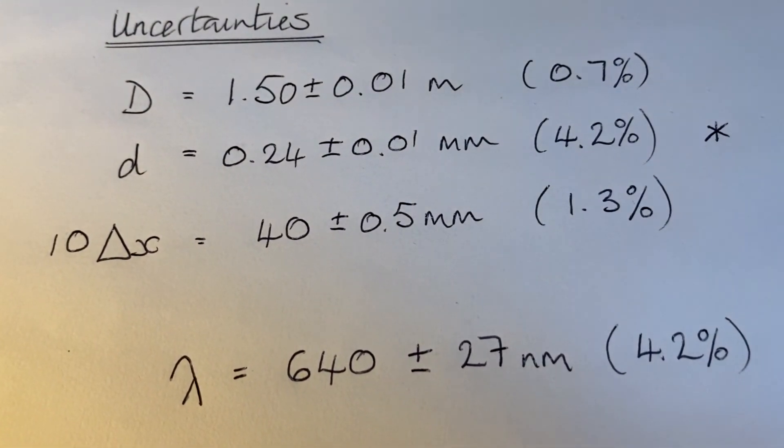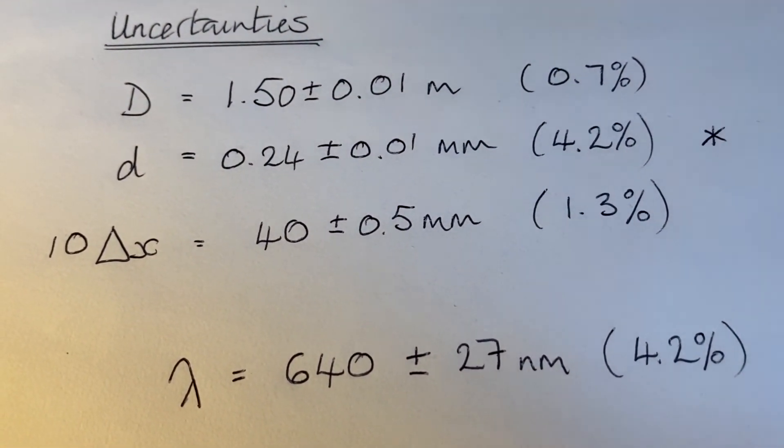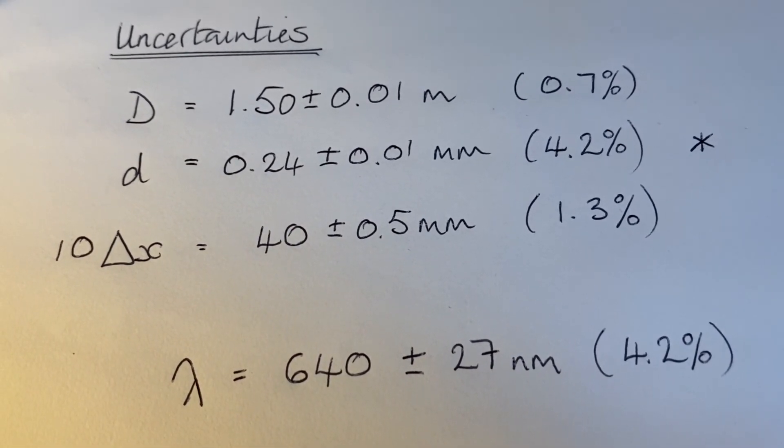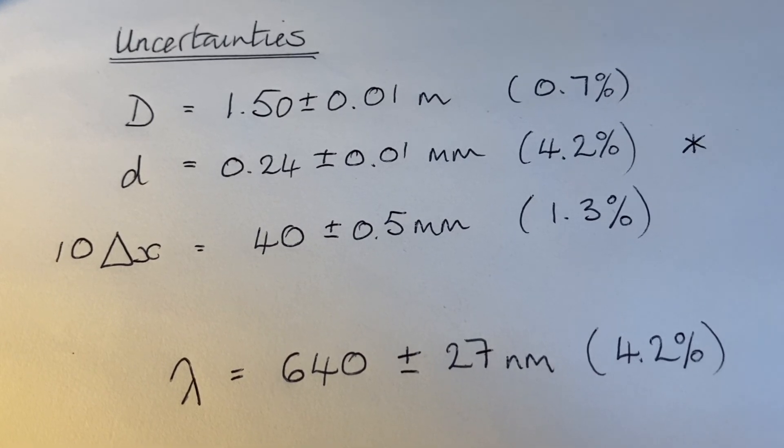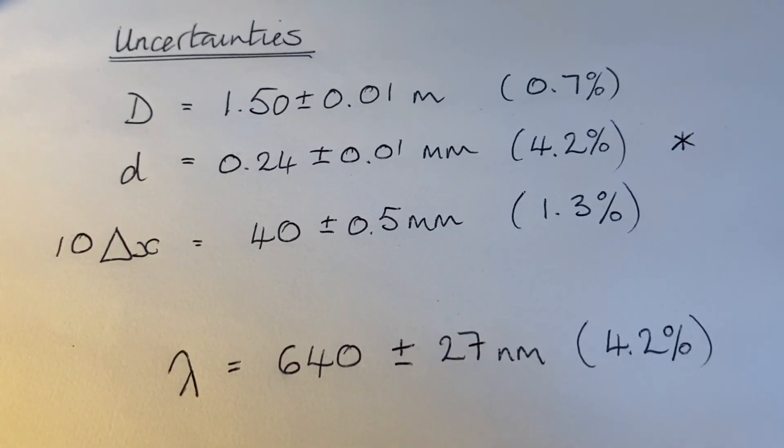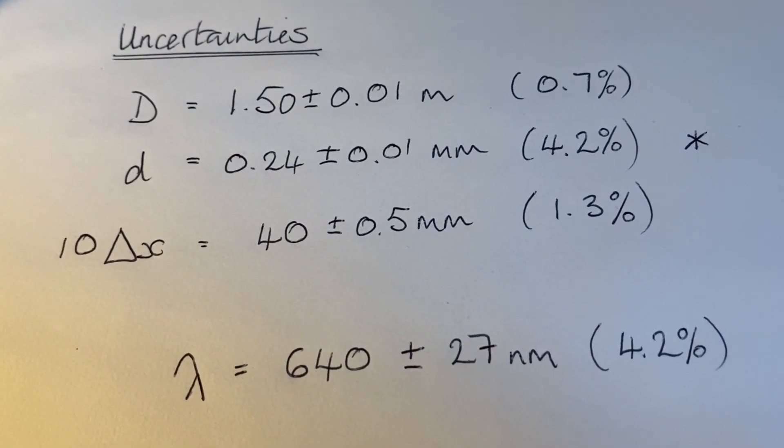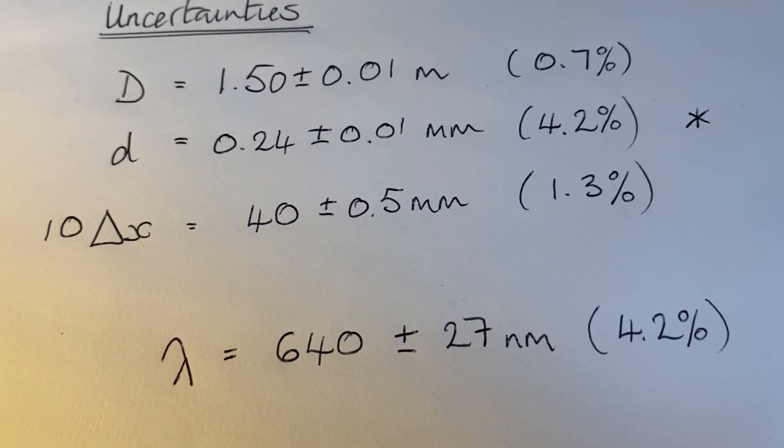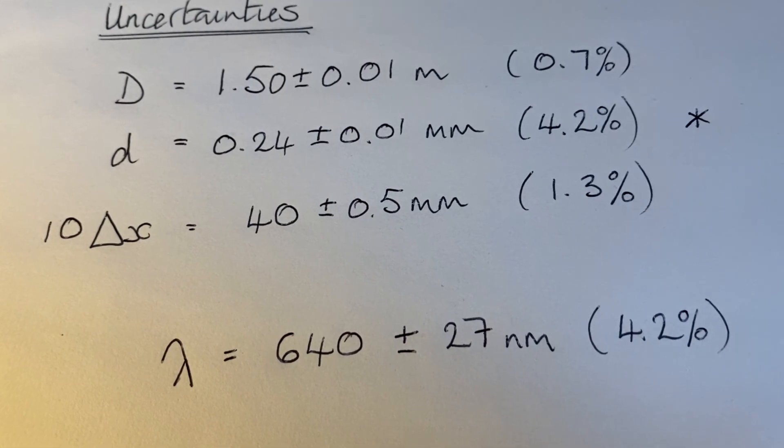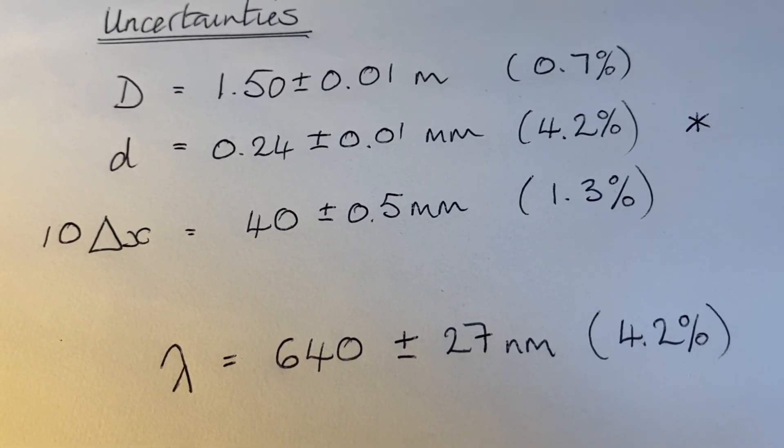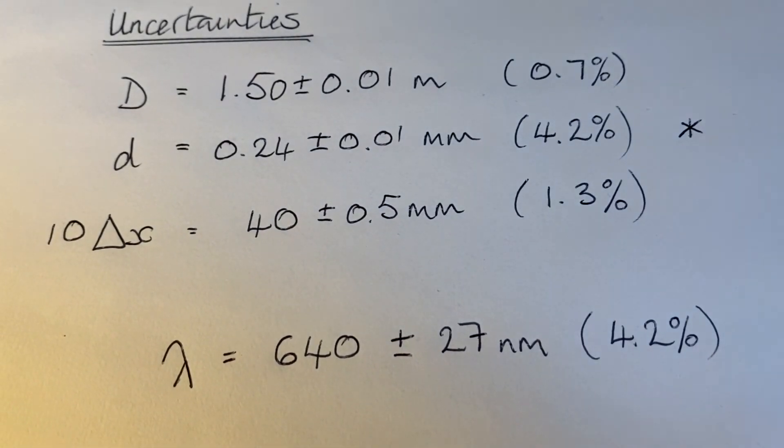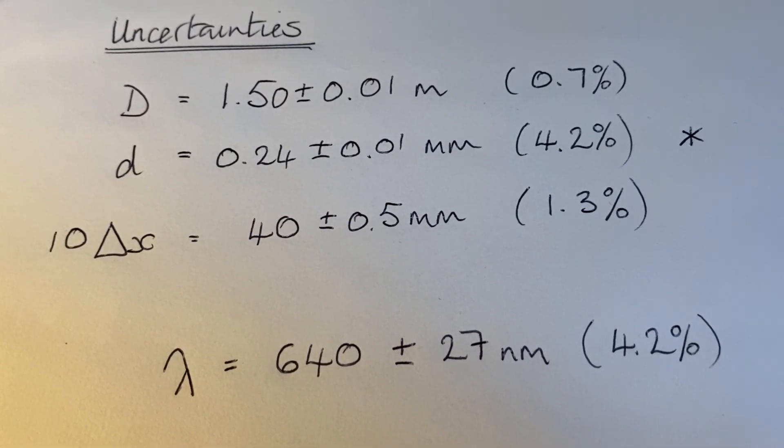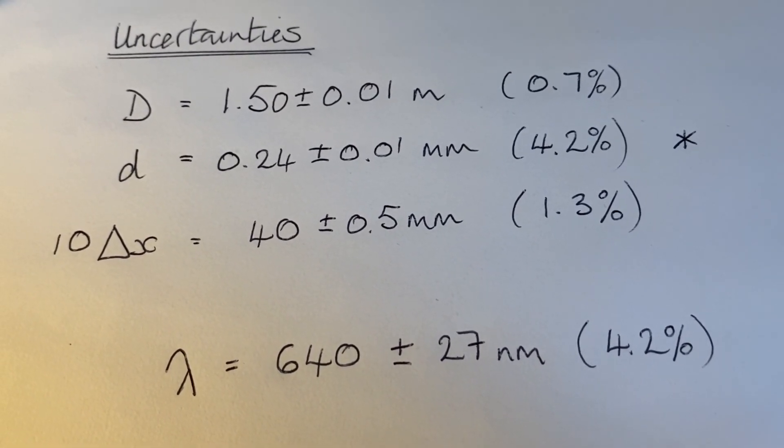The 10 fringe spacings: 40 millimeters plus or minus half a millimeter—1.3%. The 4.2% is more than three times bigger than the other two, so it is our percentage uncertainty in our calculated value for the wavelength. And 4.2% of 640 is 27 nanometers. So we can confidently say that the wavelength of the laser was 640 plus or minus 27 nanometers.